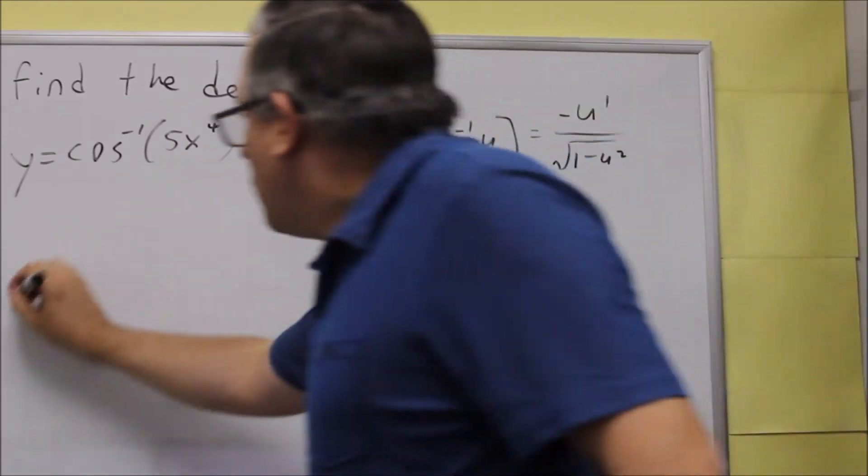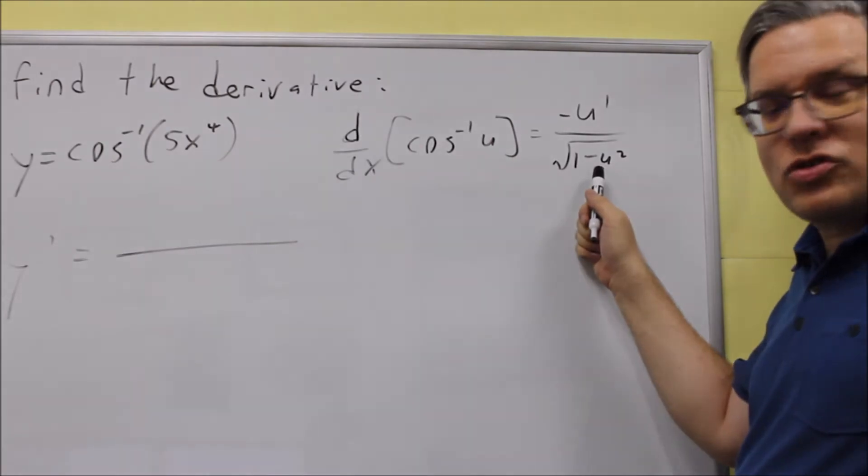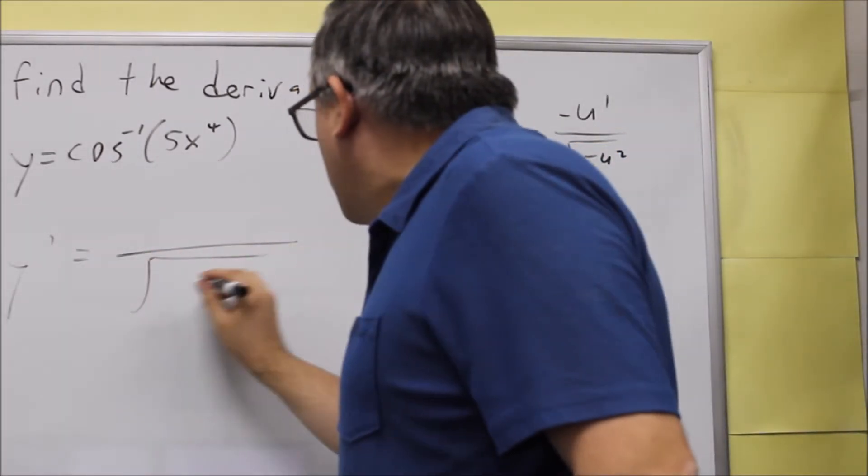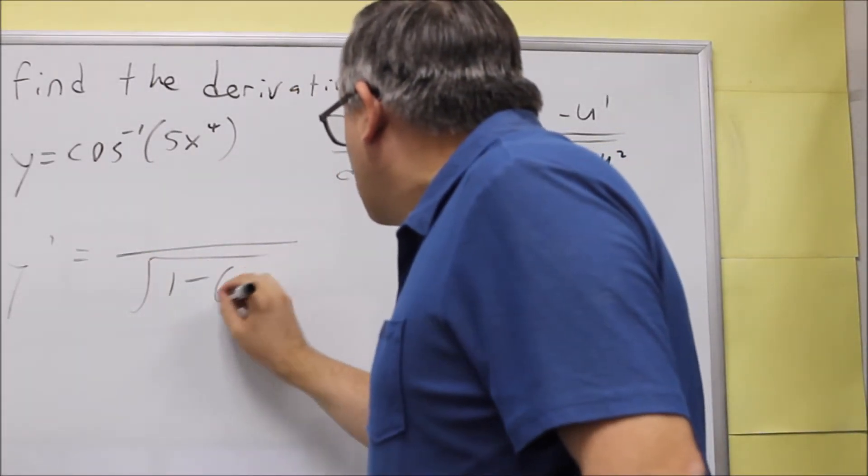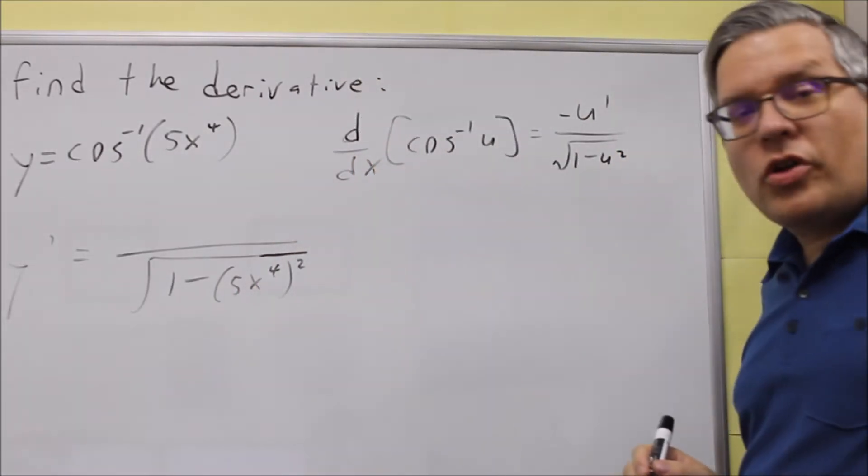So to find y prime, on the bottom, let's do that first. We have a formula we're just going to plug in. 1 minus the square root, so this is 5x to the fourth, but we have to square that one.